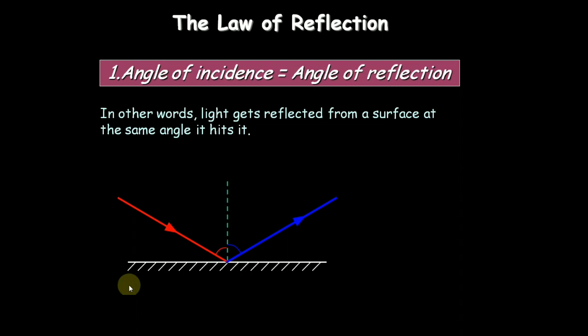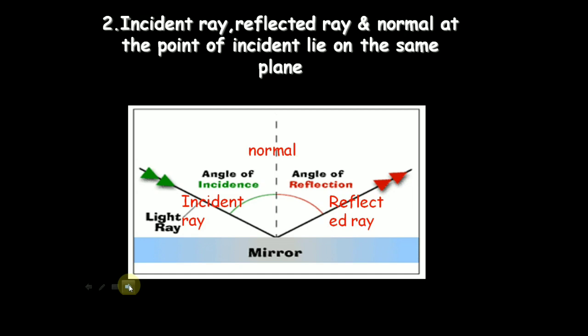The law of reflection: angle of incidence is equal to angle of reflection. In other words, light gets reflected from a surface at the same angle it hits it. Second law: incident ray, reflected ray and normal at the point of incidence lie on the same plane. You are seeing the picture.